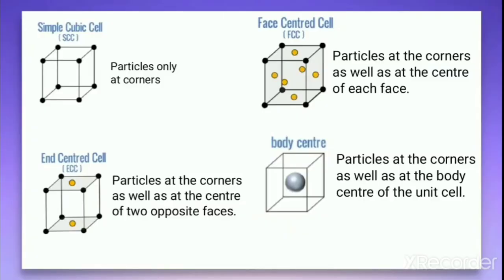In summary: in a simple cubic unit cell, the particles are only present at the corners. In a face-centered unit cell, the particles are found not only at the corners but also at the center of each face. In a body-centered cubic unit cell, the particles are at the corners as well as at the body center. In an end-centered unit cell, the particles are at the corners as well as at the center of two opposite faces.